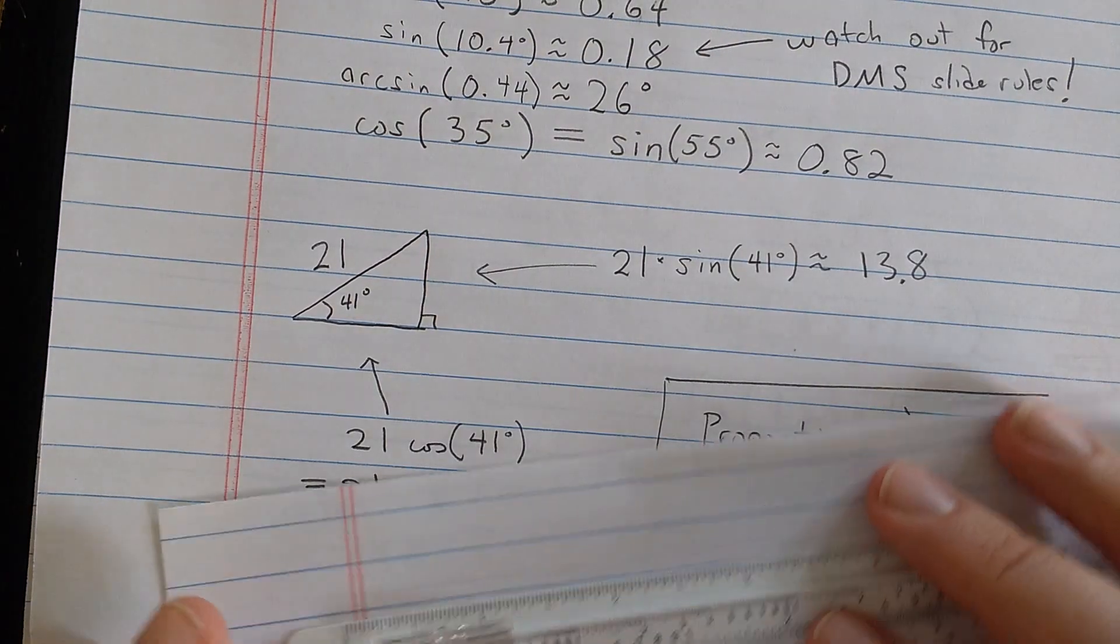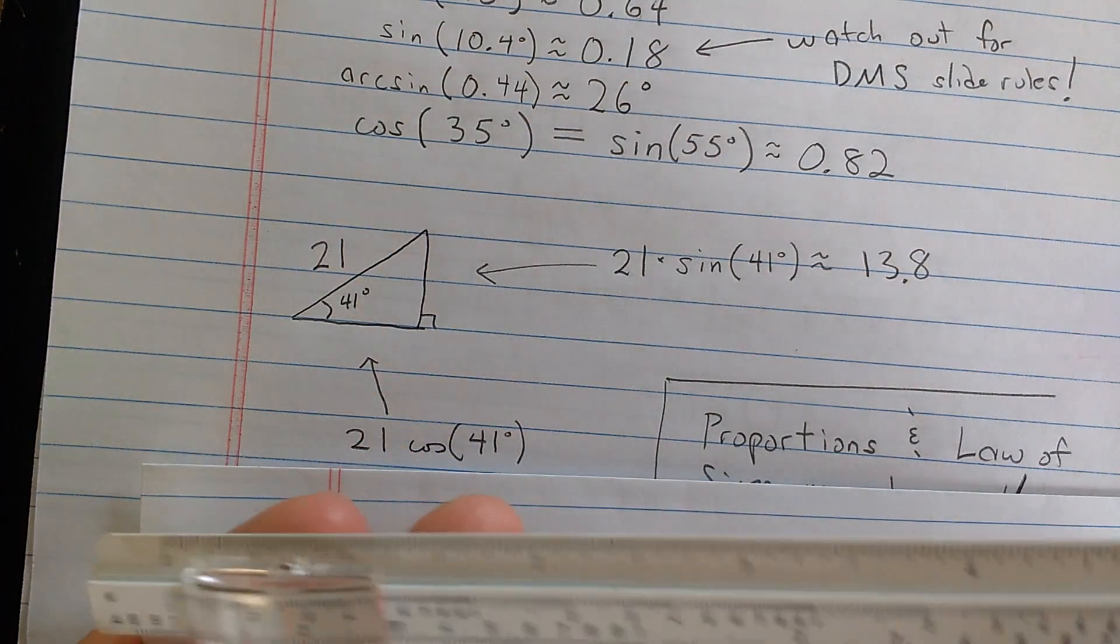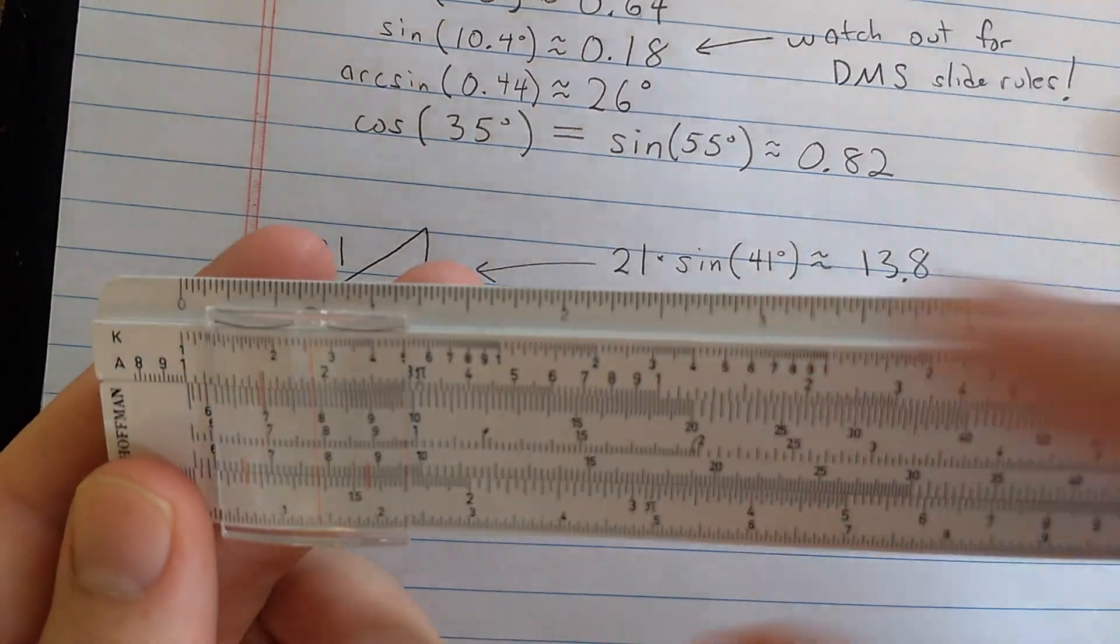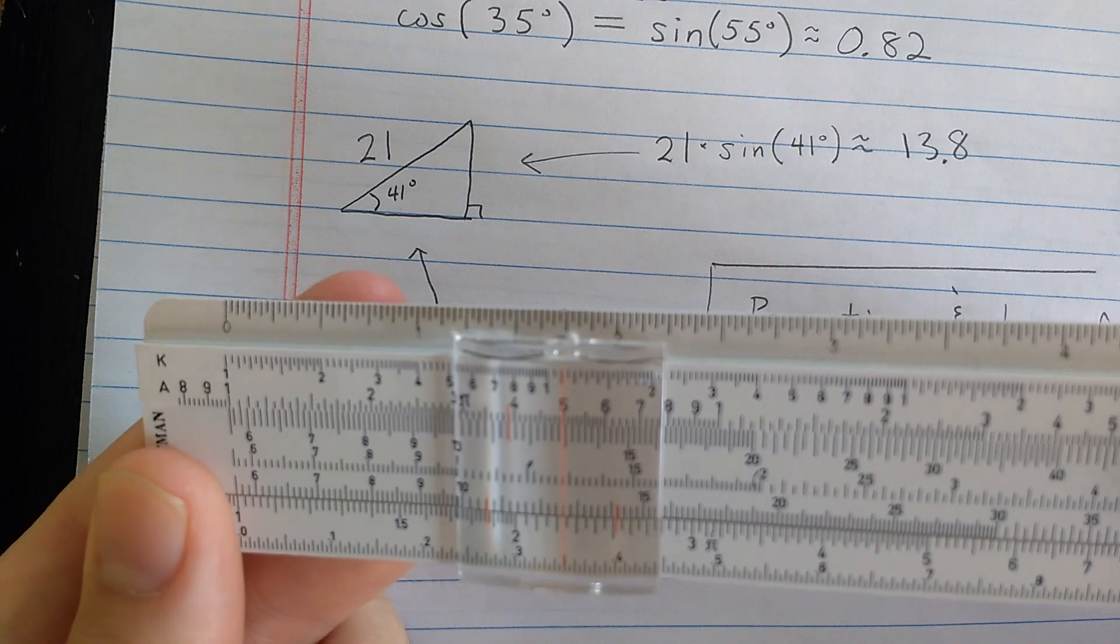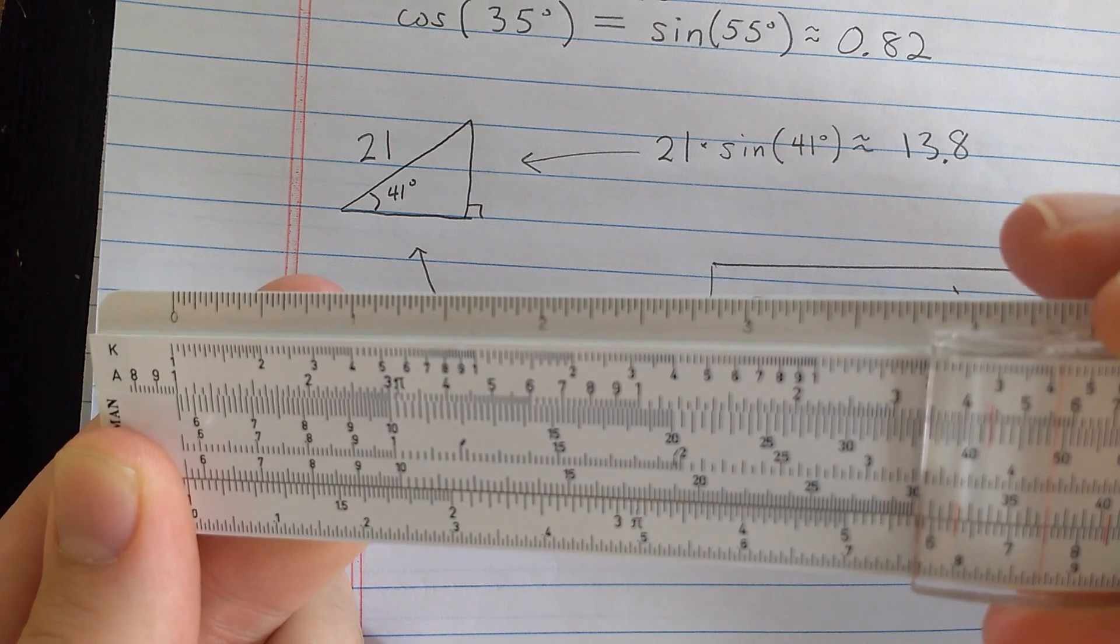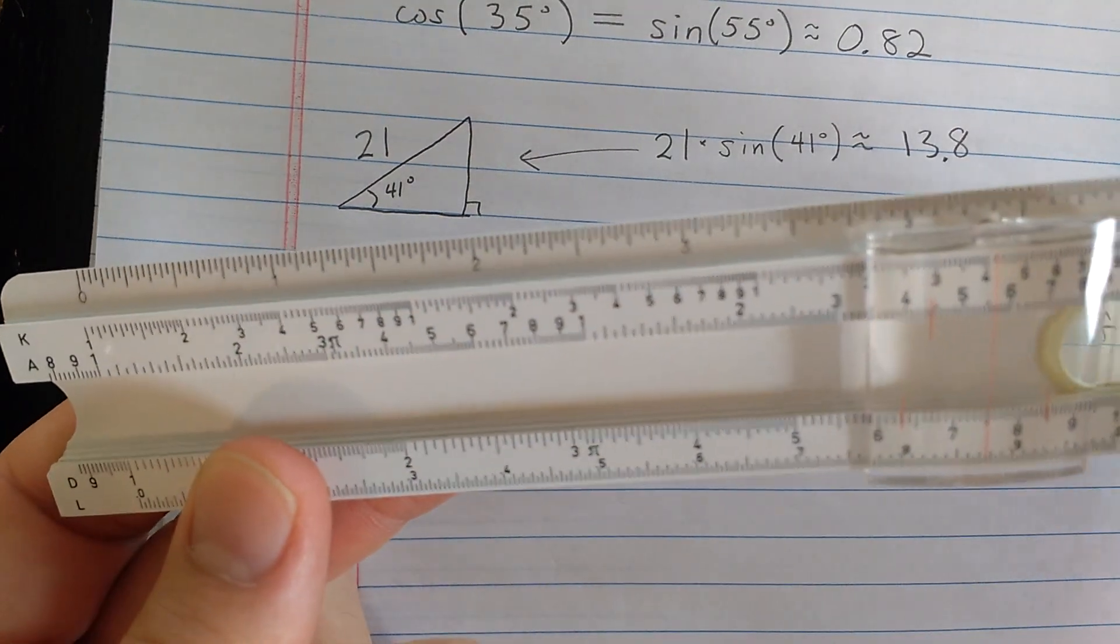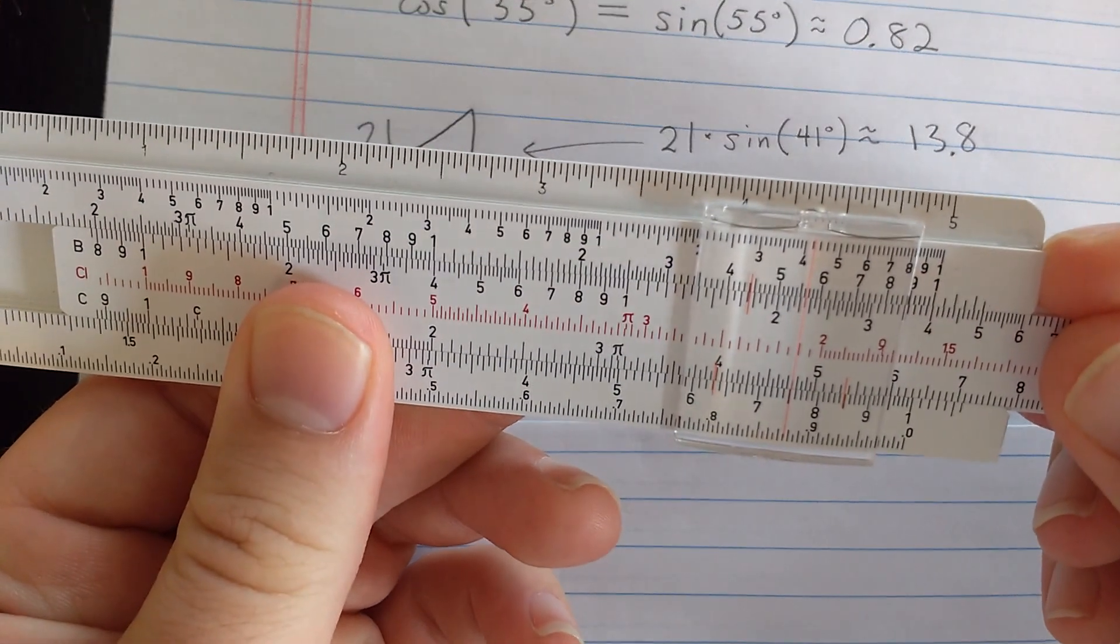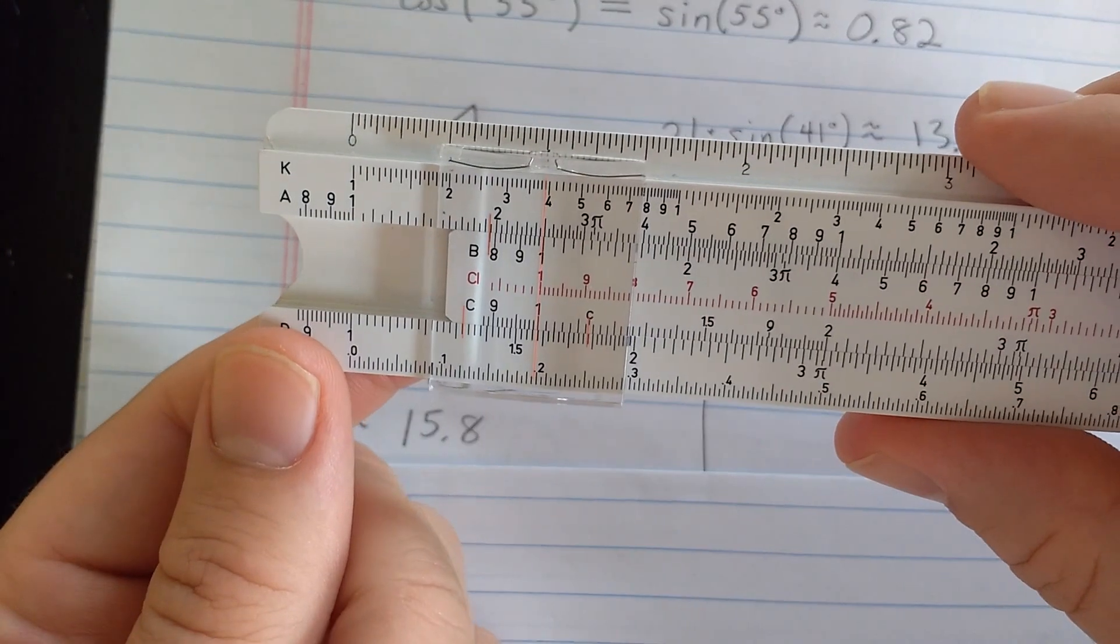Now on the other side, I should compute 21 times cosine of 41 degrees. So I need to go back. You can see how on a fancier slide rule with more scales on a side, you wouldn't have to do this. So to compute cosine of 41 degrees, what I'll do is compute sine of 49 degrees, the complement. So here, finding it out here, 49 degrees, reading the sine on the D scale, getting my other scales back here, I'm going to multiply by 21 again. Coming out to here, then I read results about 15.8.